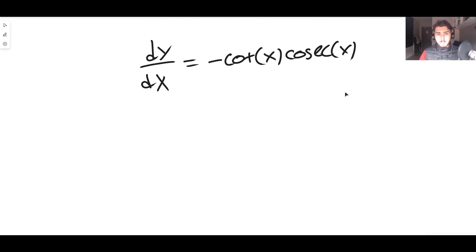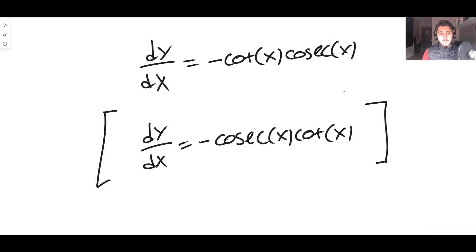And typically you write these terms the other way around, but it doesn't actually matter. I'll write it as minus cosec times cot, but it does not matter which way around you write it.